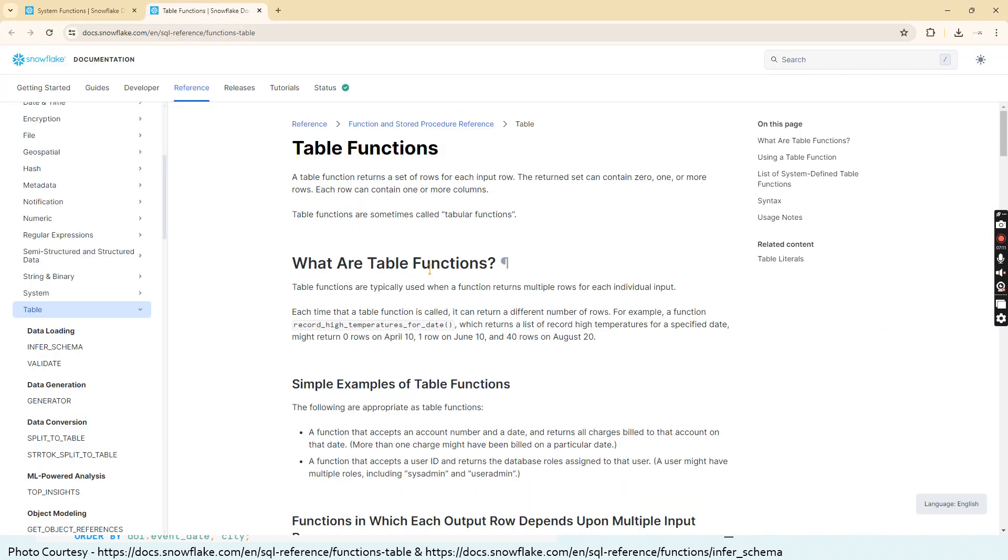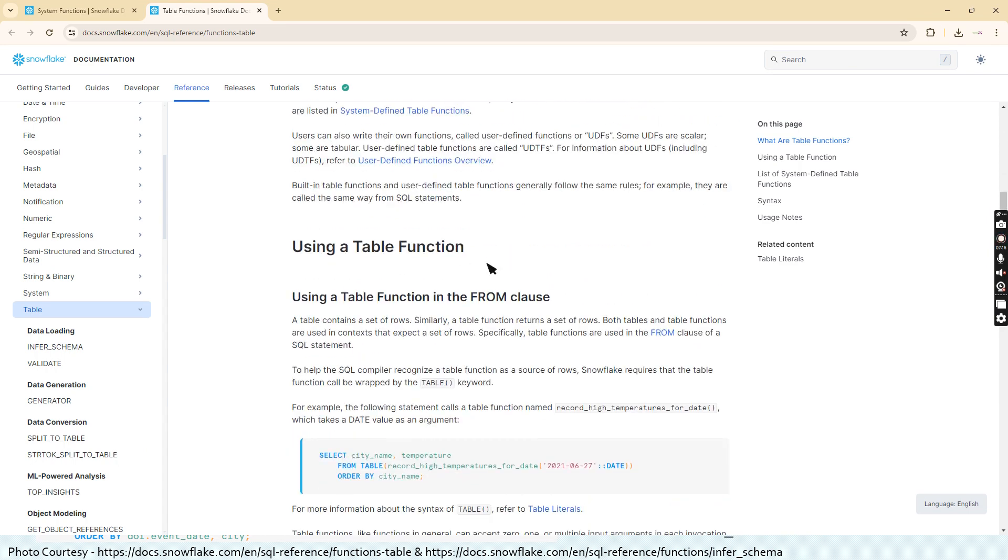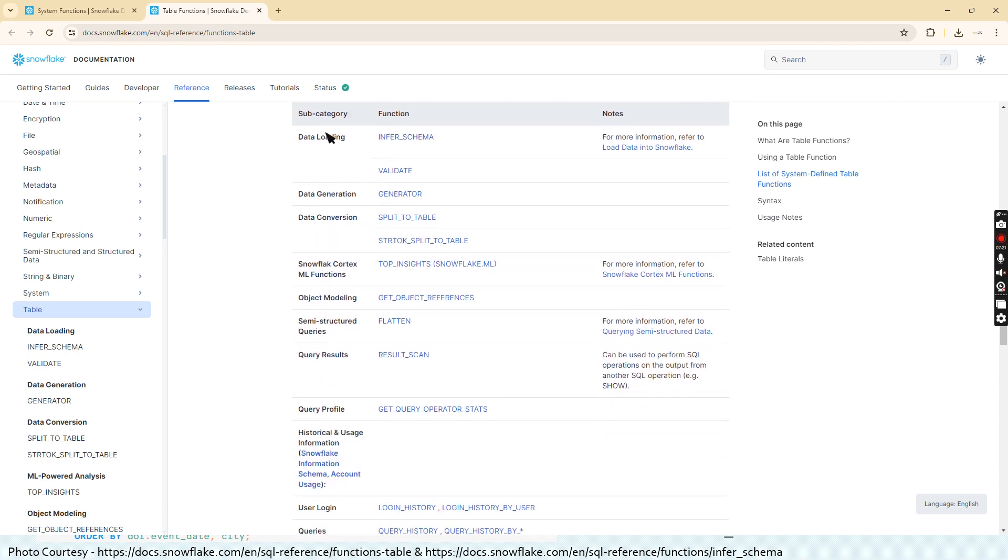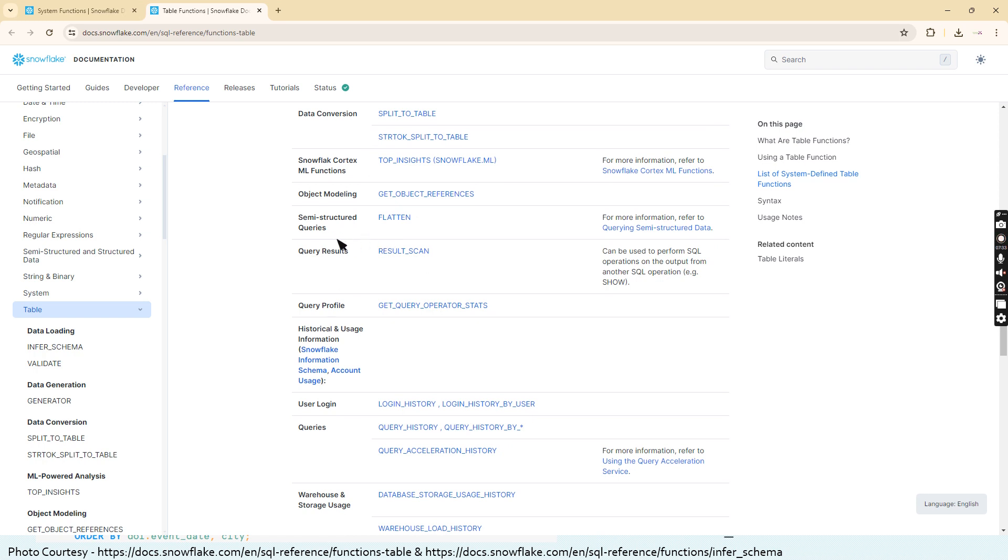Again we are moving back to the snowflake documentation for table functions. Here you can see lots of better descriptions there. But see, you can see the list of system defined table functions, there are lot many available. We saw only the infer schema alone for data loading, but you are having system defined table functions for data generation, data conversion, snowflake cortex ML functions, object modeling, semi-structured queries. Flatten is again part of the system defined table functions only.